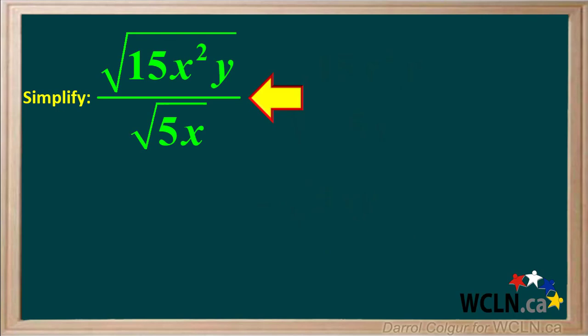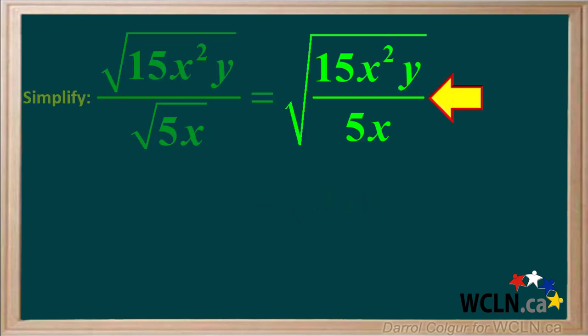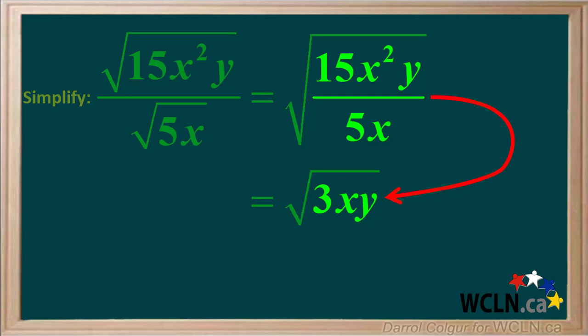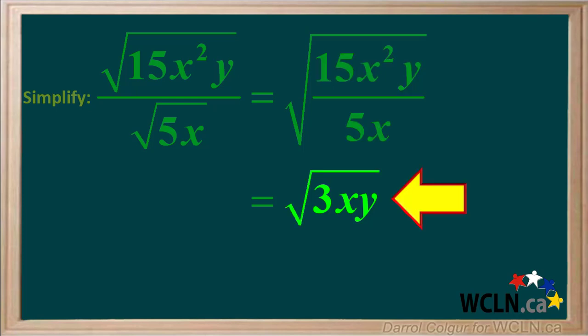Expressions with variables can also be divided. We're asked to divide the square root of 15x squared y by the square root of 5x. This equals the square root of 15x squared y over 5x. Dividing both numerator and denominator by 5x, we get 3xy in the numerator, so the final answer is the square root of 3xy.